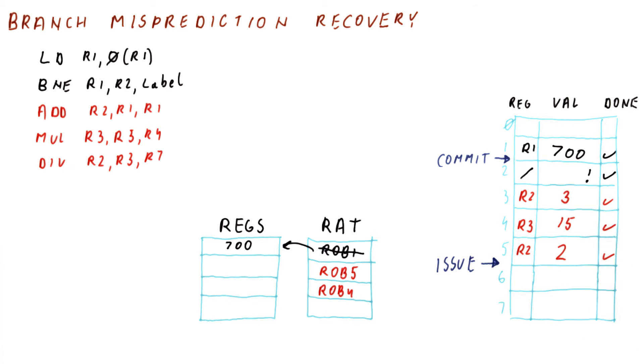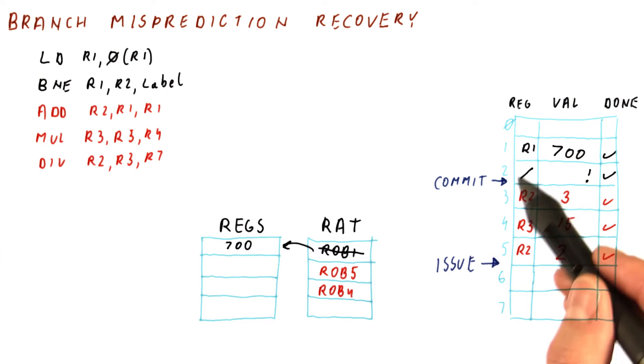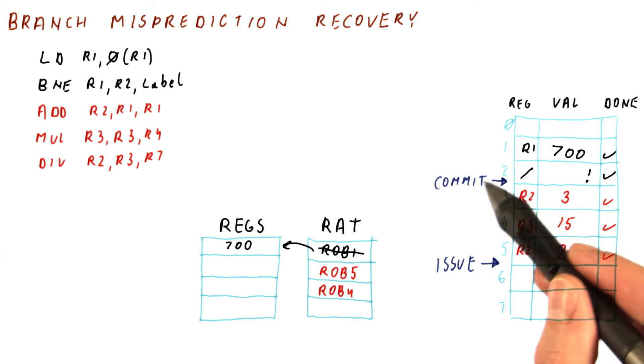At that point, what we do is we commit the branch normally. It doesn't write to any registers, so the commit just moves this.